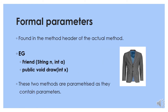Formal parameters are the ones found in the method header of the actual method. So Friend(String n, int a) and public void draw(int x) — these are the formal parameters. These two methods are said to be parameterized because they do contain parameters.